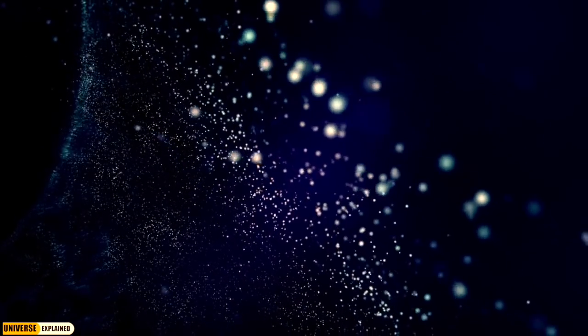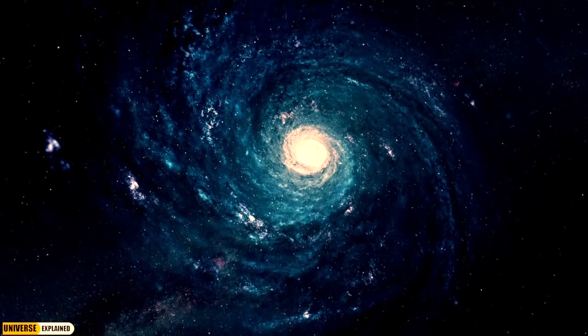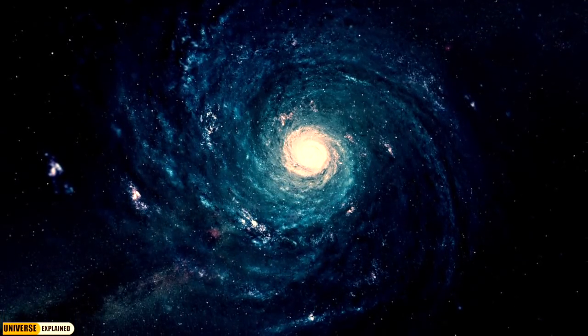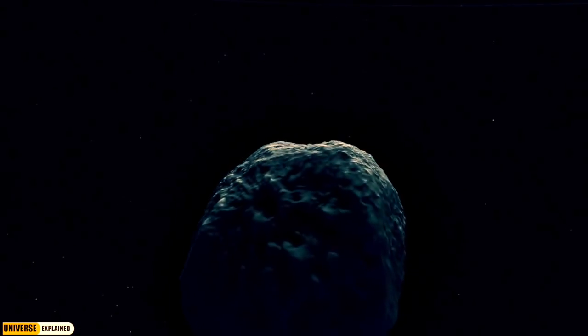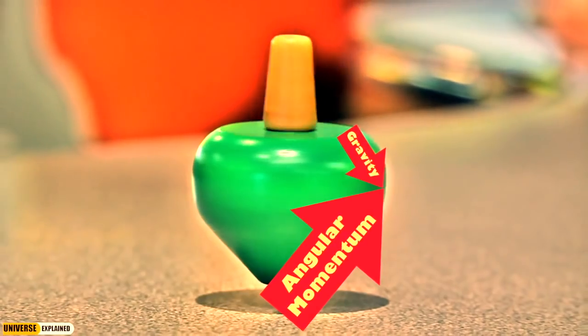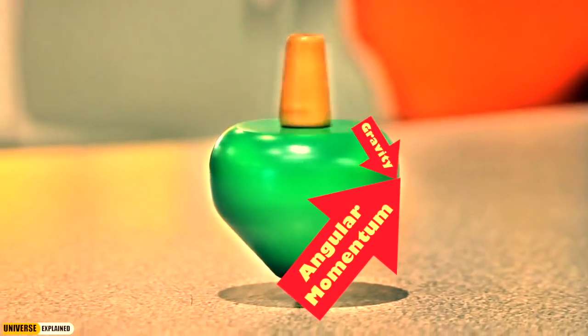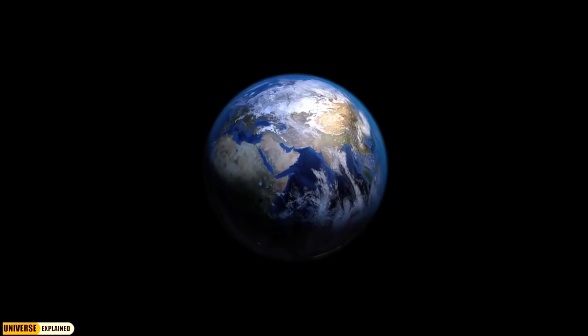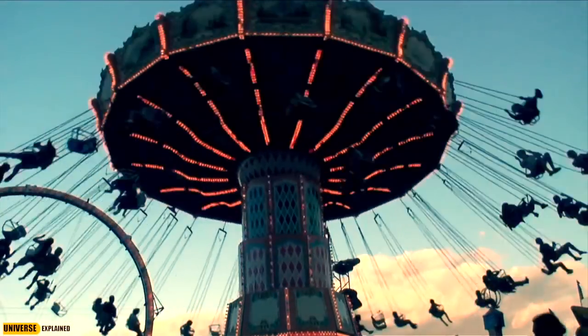Over time, the leftover spinning dust particles collided with each other and began to stick, creating larger rocks and the planets. As the dust particles that created the Earth stuck together, the angular momentum was conserved, causing the growing planet to spin even faster.